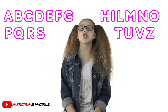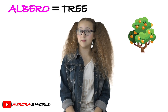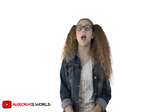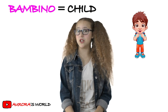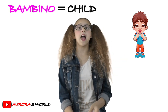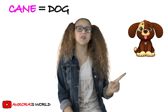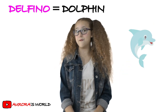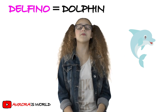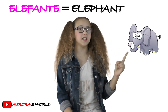Now let's go over what the words mean. Albero means tree, bambino means child, cane means dog, delfino means dolphin, elefante means elephant.